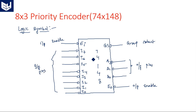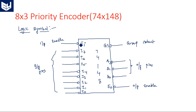To summarize the logic symbol: 74148 has eight input pins and three output pins. Along with these, we also have an enable input pin, an enable output pin, and a group select pin. The enable input pin and enable output pin are used for cascading this 8-by-3 priority encoder multiple times.